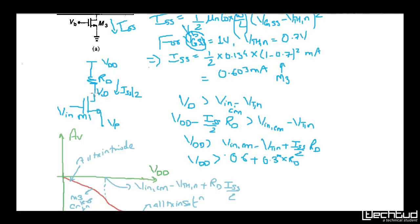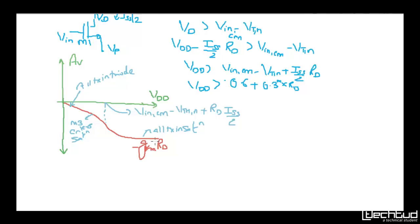Apply the saturation condition: Vds ≥ Vgs − Vth, which means Vd ≥ Vg − Vthn. The drain voltage Vd equals Vdd − (Iss/2)·Rd by KVL. Substituting, the condition becomes: Vdd ≥ 0.6 + 0.3mA·Rd. When Vdd crosses this value, the transistor is pulled into saturation. For example, if Rd = 1kΩ, then Vd is approximately 0.9V and all transistors come into saturation.